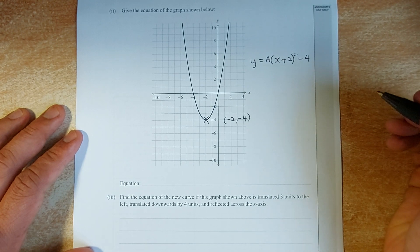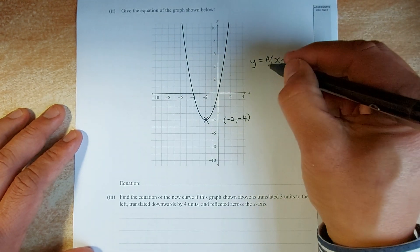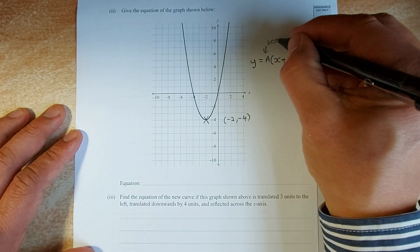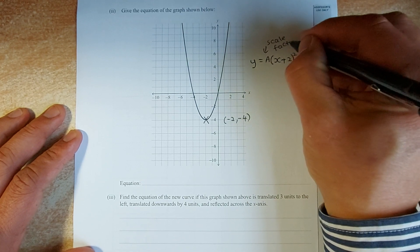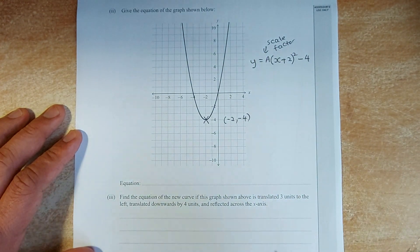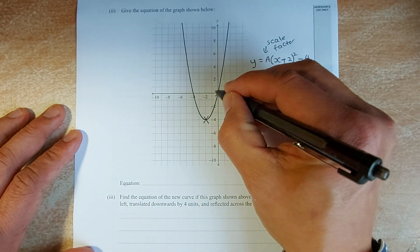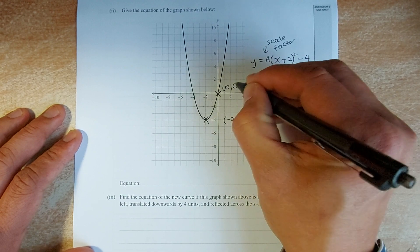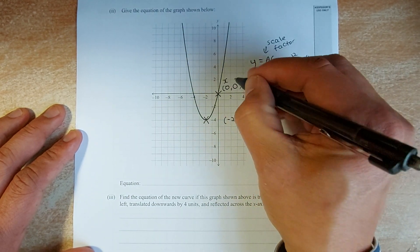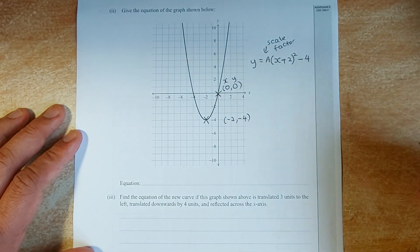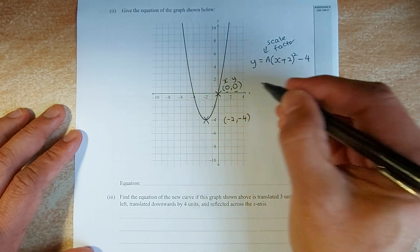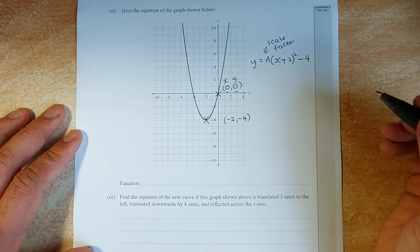Okay, now the next step is to find the value of a, also called the scale factor. The scale factor is found by substitution the x and y value into the equation. You can find any points on the graph. I would like this point, because it's the easiest point. That point is 0, 0. Your x is 0. Your y is 0.